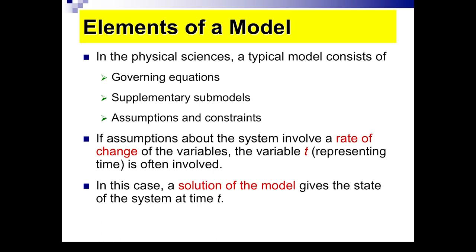In the physical sciences, a typical model consists of a set of governing equations, usually from the laws of physics. These laws will probably require some supplementary models or laws, and then you will need assumptions that you will impose on your model. These assumptions are usually constrained by many factors. For instance, if the assumptions involve rates of change of a variable, the variable time, denoted by t, is often involved. In this case, we say that a solution of the model is obtained when we can describe the state of the system at a particular time.